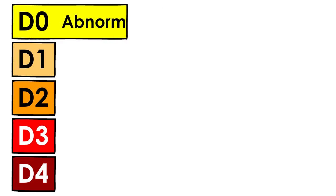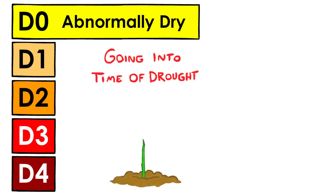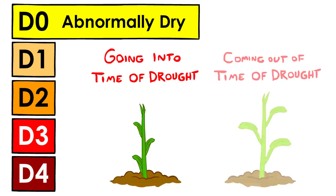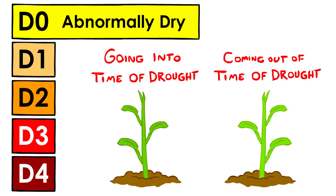D0 indicates abnormally dry conditions. You might expect to see the slowing of plant growth if you were heading into a time of drought, or fields not quite recovered if you were coming out of more extreme conditions.